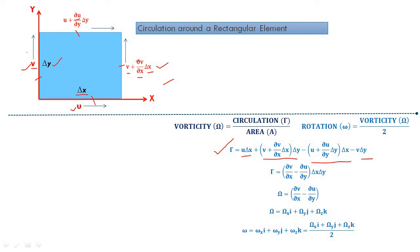Taking anticlockwise rotation as positive and clockwise as negative, the terms u·delta x and v·delta y cancel out, leaving circulation equal to (∂v/∂x − ∂u/∂y)·delta x·delta y. This is the circulation — the force making this rectangular fluid element rotate along a circular path.